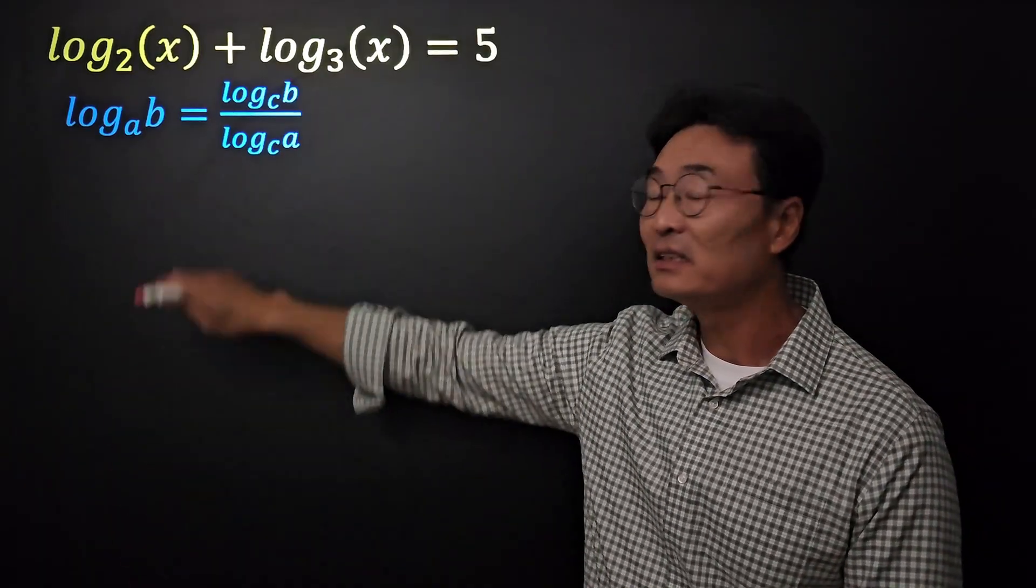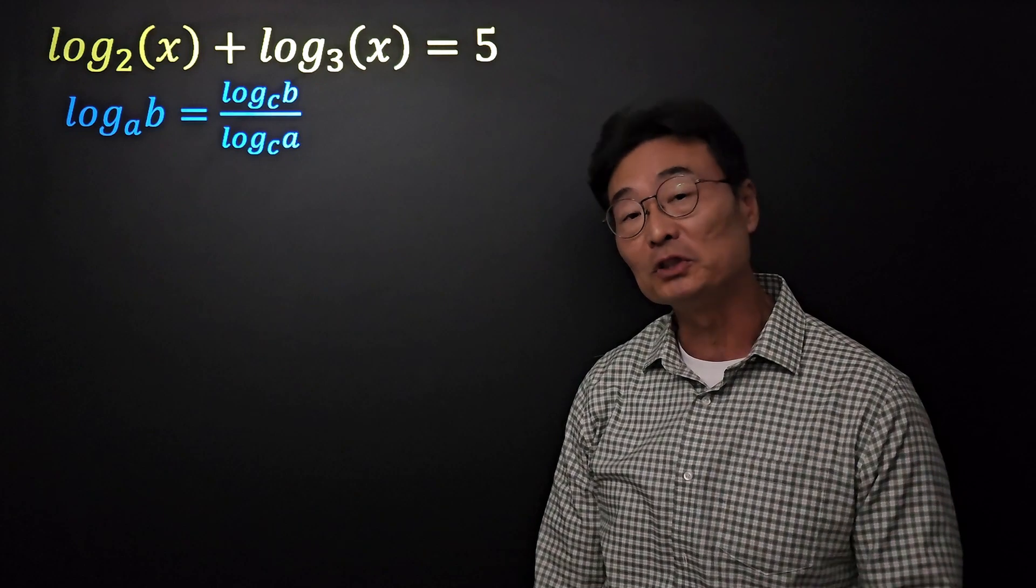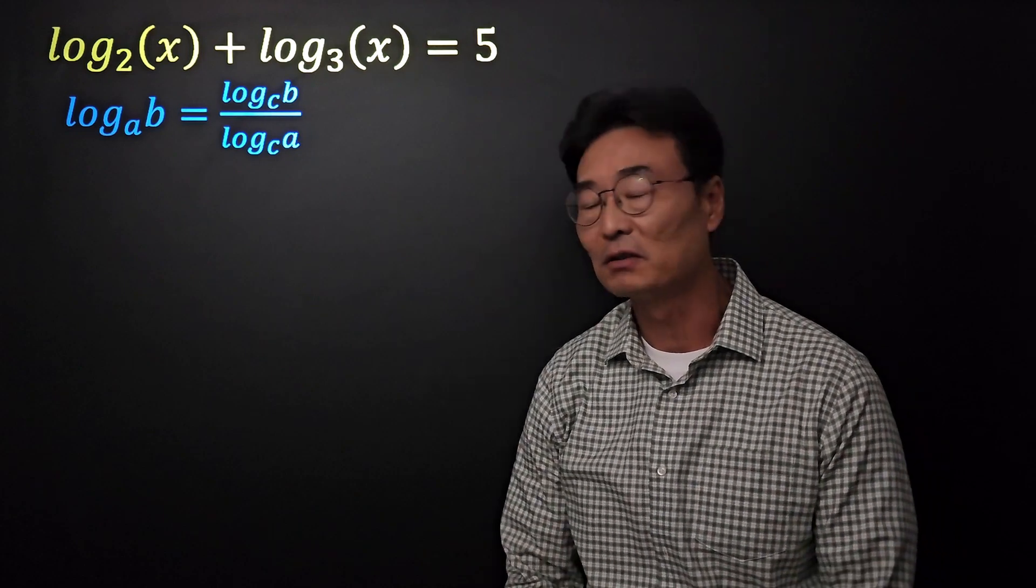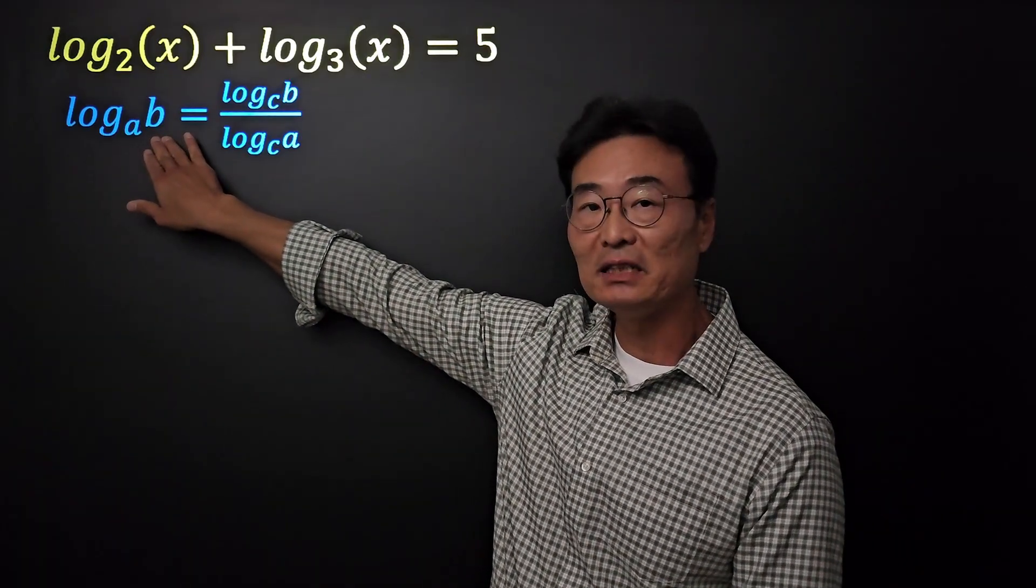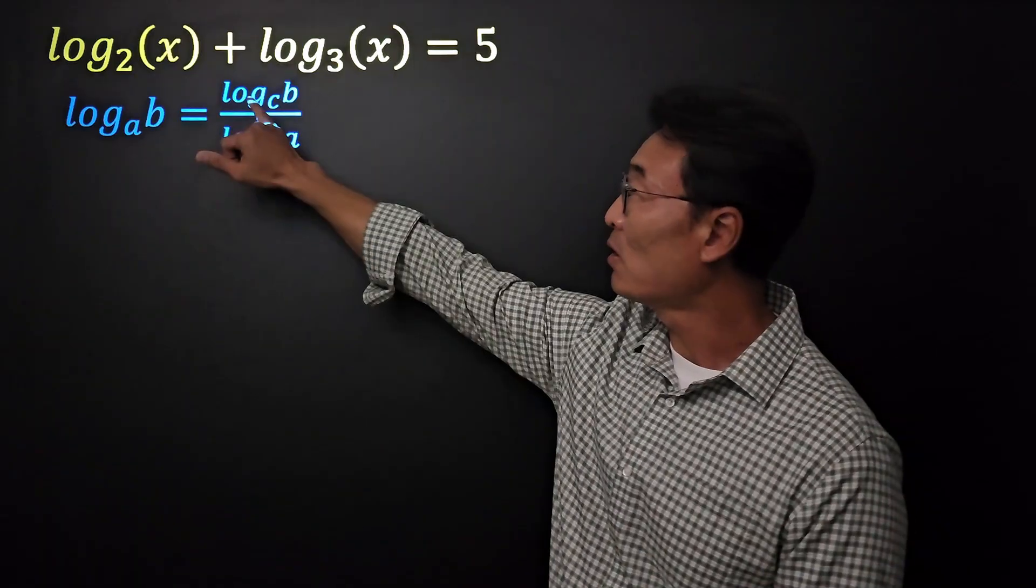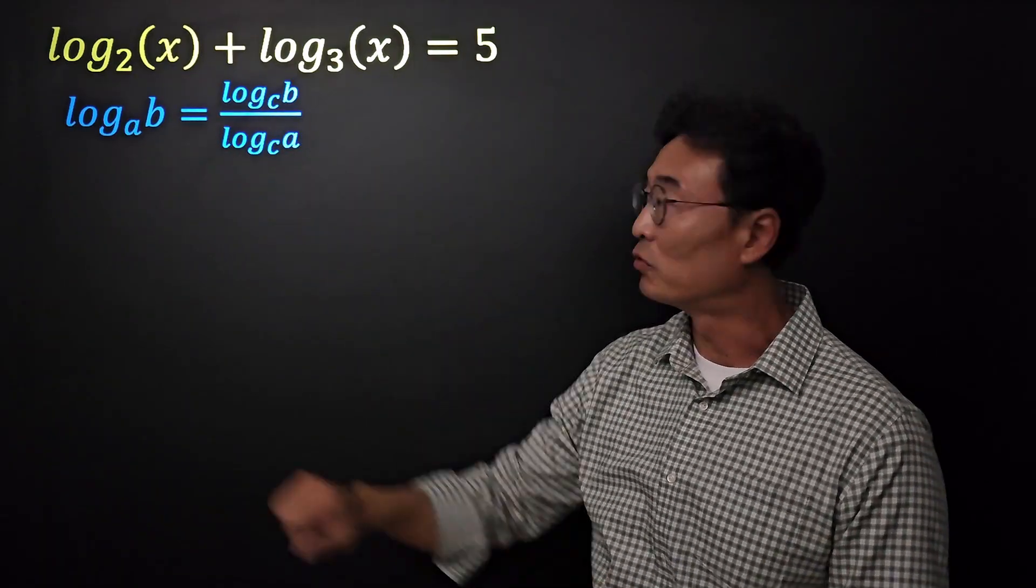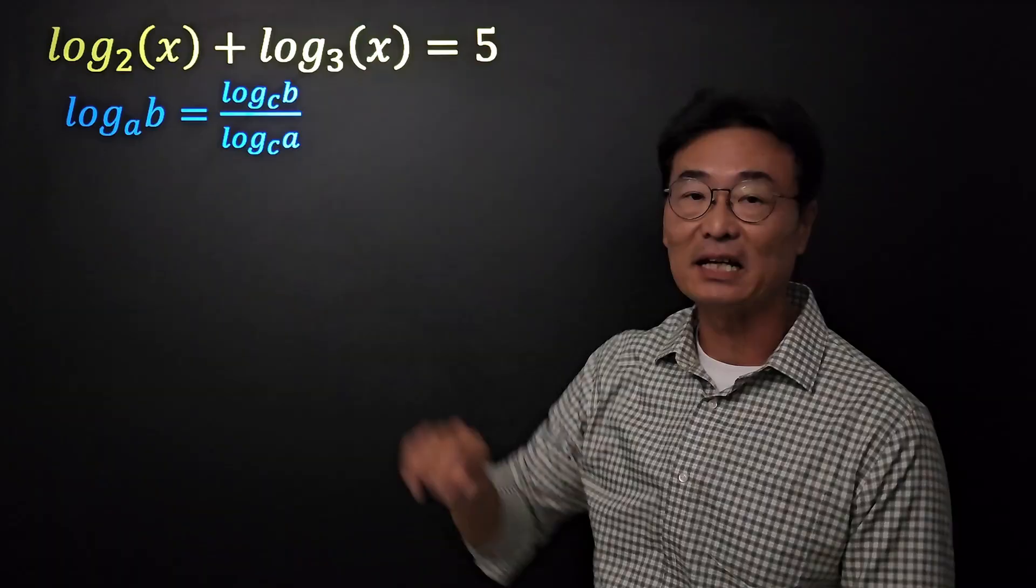First, let's take a look at the change of base theorem, which we're going to be using to solve this equation. The theorem says that if you have log of base a of b, it can be written as log of base c of b over log of base c of a.